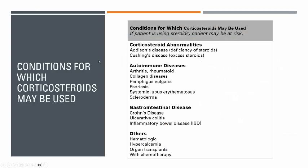The conditions where corticosteroids are used are classified as: corticosteroid abnormalities — Addison's disease (deficiency of steroids) and Cushing's disease (excess steroids); autoimmune diseases — rheumatoid arthritis, collagen diseases, pemphigus vulgaris, psoriasis, systemic lupus erythematosus, scleroderma; gastrointestinal diseases — Crohn's disease, ulcerative colitis, and inflammatory bowel disease (IBD); and other diseases — hematological diseases, hypercalcemia, organ transplant, and chemotherapy adjuncts.